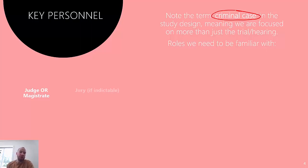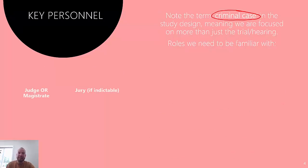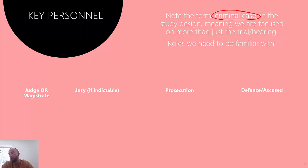The roles we need to be familiar with are judge or magistrate, jury, and parties, because they are listed in the study design. That allows examiners to ask us directly about them. You can get asked to explain the role of the parties, the jury, or the magistrate specifically - so you need to know each of them. You can't just pick a couple.